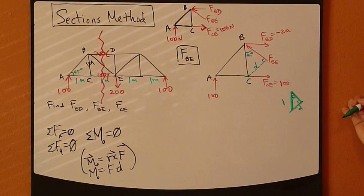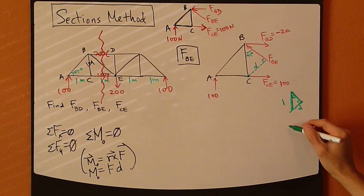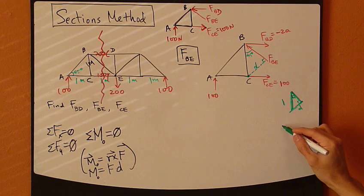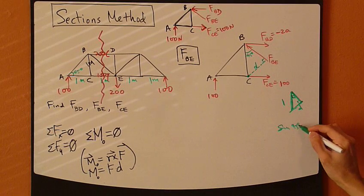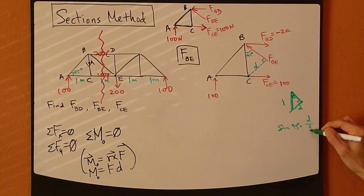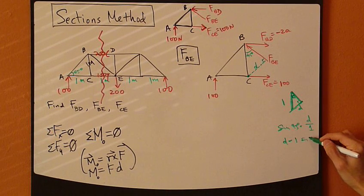Use trigonometry, or you can use similar triangles. Let's say I use trigonometry. Sine 45 degrees equals D over 1, so D is 1 times sine 45 degrees.